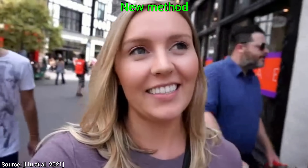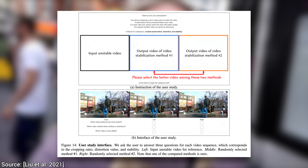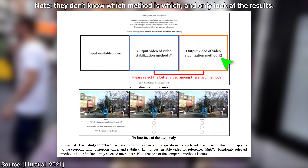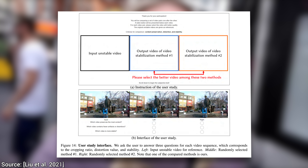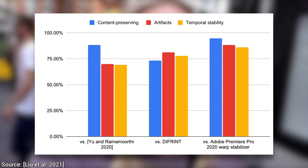The third way to test which technique is better, and by how much, is by conducting a user study. The authors have done that too. In this, 46 humans were called in, were shown the shaky input video, the result of a previous method, and the new method, and were asked three questions: which video preserves the most content, which has fewer imperfections, and which is more stable. And the results were stunning. Despite looking at many different competing techniques, the participants found the new method to be better at the very least 60% of the time on all three questions — in some cases, even 90% of the time, or higher. Praise the papers!